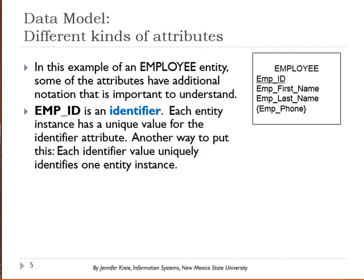There's additional notation here — emp_ID is underlined to show that it is an identifier, a unique identifier. Each employee instance is going to have an employee ID value that no other employees have. So Carla Stevens has employee ID 3492 and David Adams has employee ID 4382. We can always find that specific row or instance of Carla Stevens because we know her unique identifier.